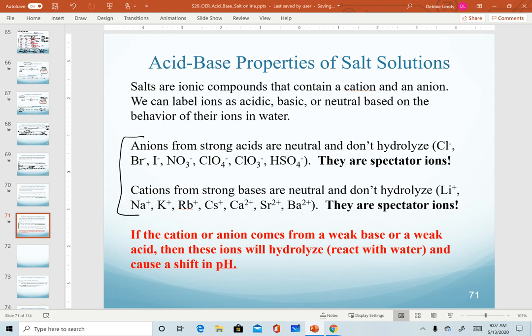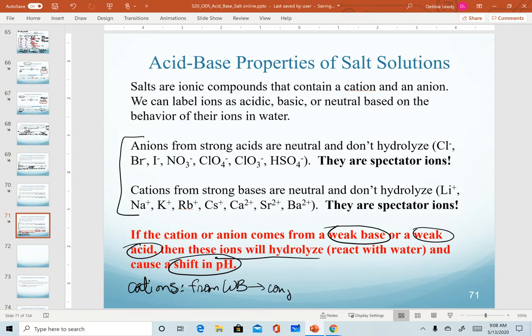So these are the anions and cations that are neutral. And so hopefully it makes sense that if we have a cation or anion that comes from a weak base or a weak acid, these are the ions that will hydrolyze. In other words, react with water that will cause a shift in pH because they will act as acids or bases. So our cations that come from a weak base will act as an acid because they will be the conjugate acid of that weak base. Similarly, anions that come from weak acids will act as conjugate bases or will be conjugate bases and therefore will act as bases in solution. We'll dive into that concept in more detail in the next video.